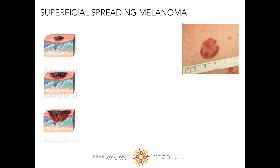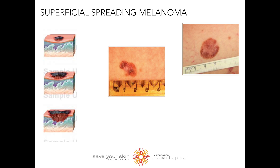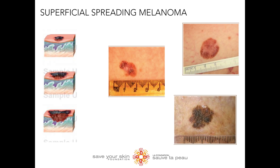Superficial spreading melanoma may appear as an irregular, flat, discolored region of the skin, and can range from light brown, black, blue, pink, red, or white. It can begin as a small freckle and grow larger over time, which is why it's important to check your skin regularly.